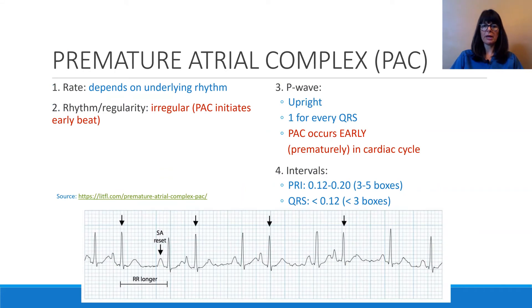Now looking at the rules for PACs. The rate will always depend on the underlying rhythm — mostly normal, like 60 to 100 beats per minute. But the rhythm will be irregular because the PAC occurs early in the cardiac cycle. P waves will be upright with one for every QRS, but the PAC occurs early or prematurely. The PRI will be normal for both the regular beat and the early beat, and the QRS will be normal — less than 0.12 seconds.